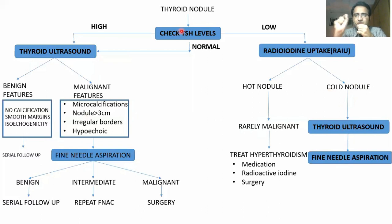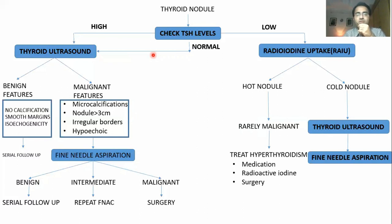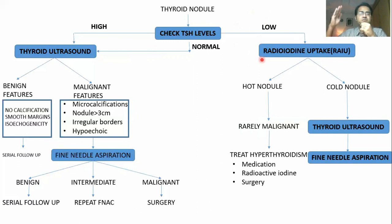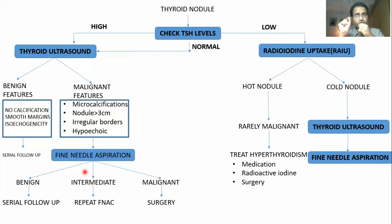This is the complete workup of thyroid nodule. The main thing to understand: when TSH is high or normal, the nodule is non-functioning and level of suspicion for tumor goes up. When TSH is low, it is a functioning nodule causing a negative feedback on TSH — level of suspicion goes down. The goal is to perform fine needle aspiration or biopsy only in selected patients at the very end of the workup.